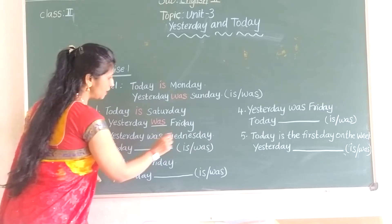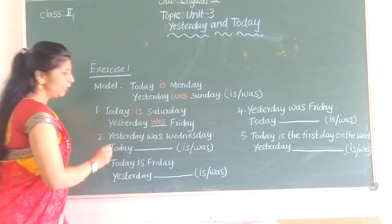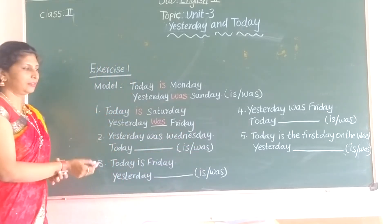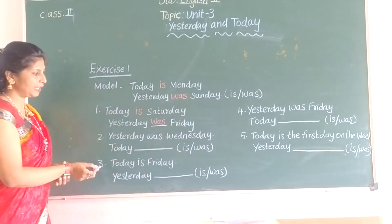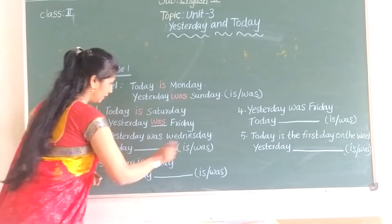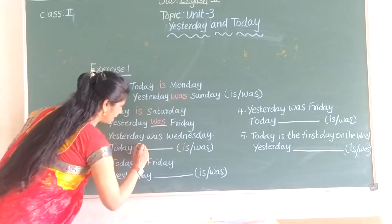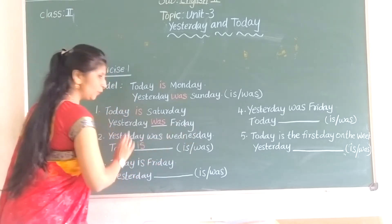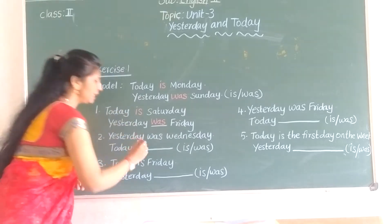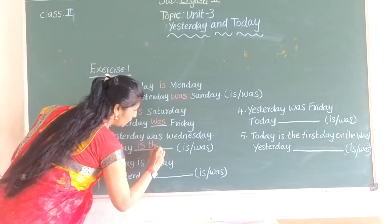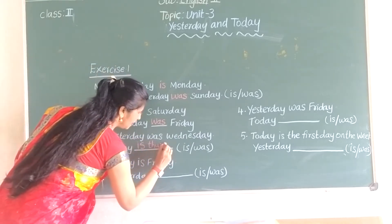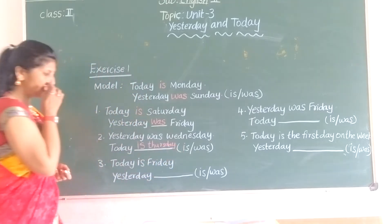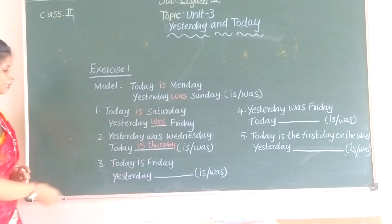Yesterday was Wednesday, today is Thursday. Yesterday means past tense, so use 'was'. Today is Thursday. Understood.